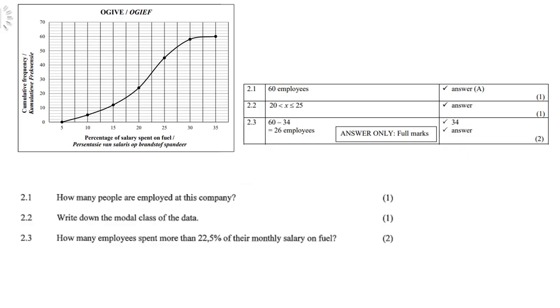So 2.1, how many people are employed at this company? Of course you go to the highest point on the cumulative frequency which of course is opposite 60. So 60 people employed.